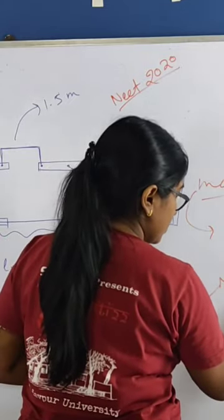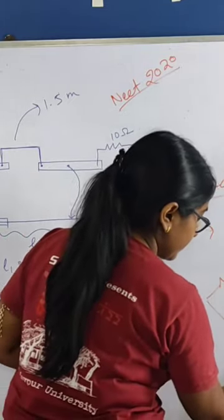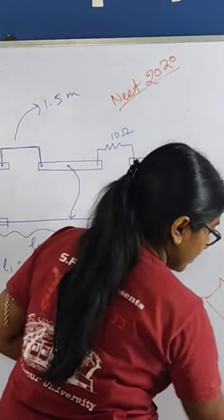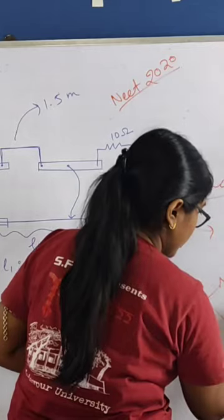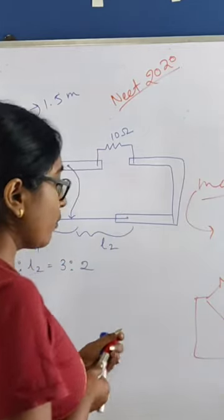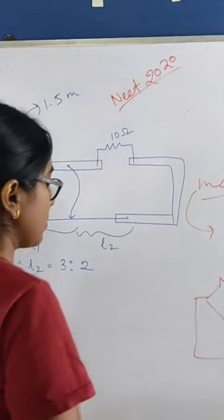Suppose this is a Western Bridge. Here a galvanometer is connected. You can see four resistances are there in the Western Bridge.